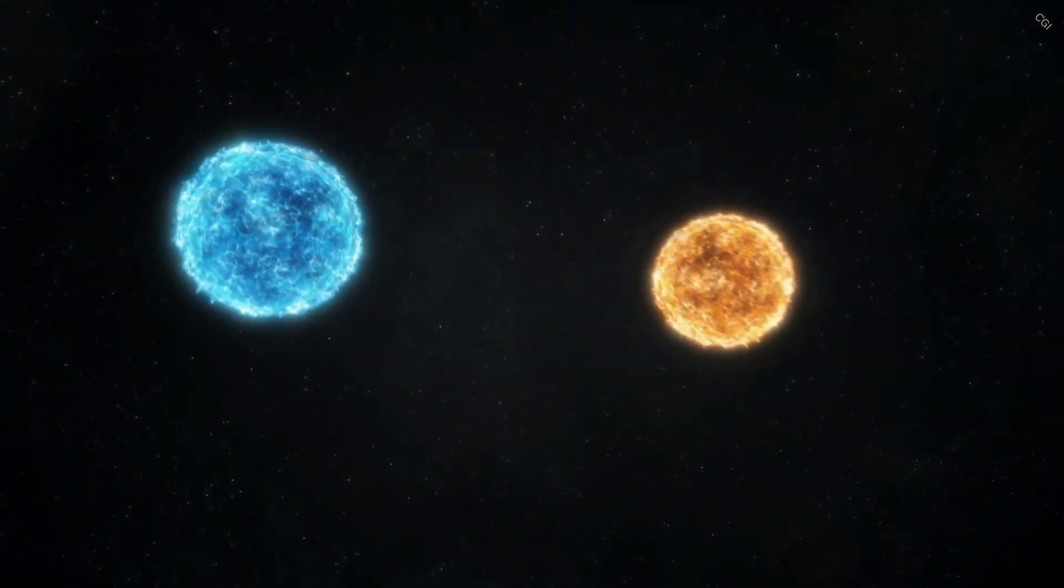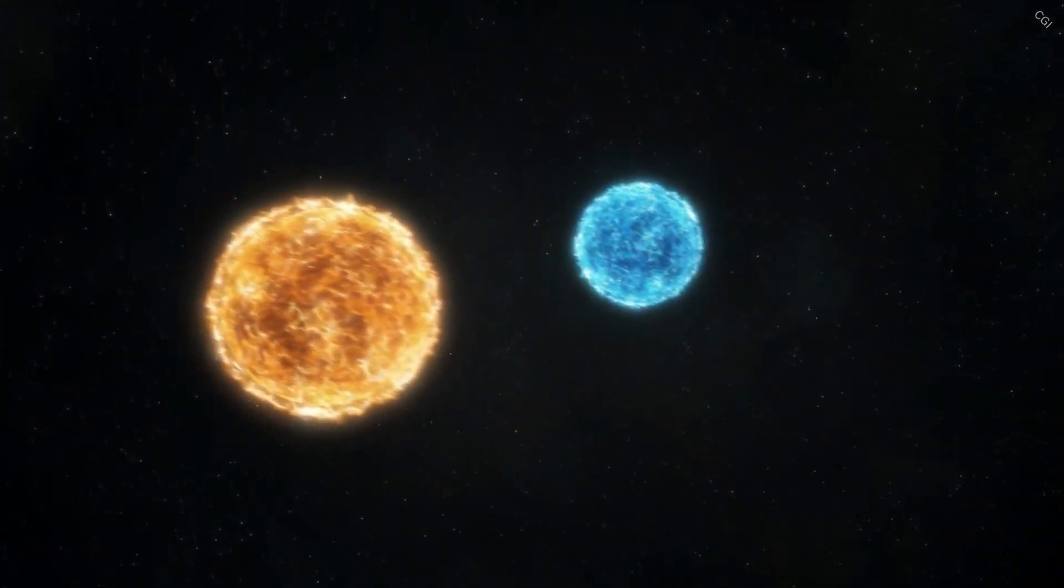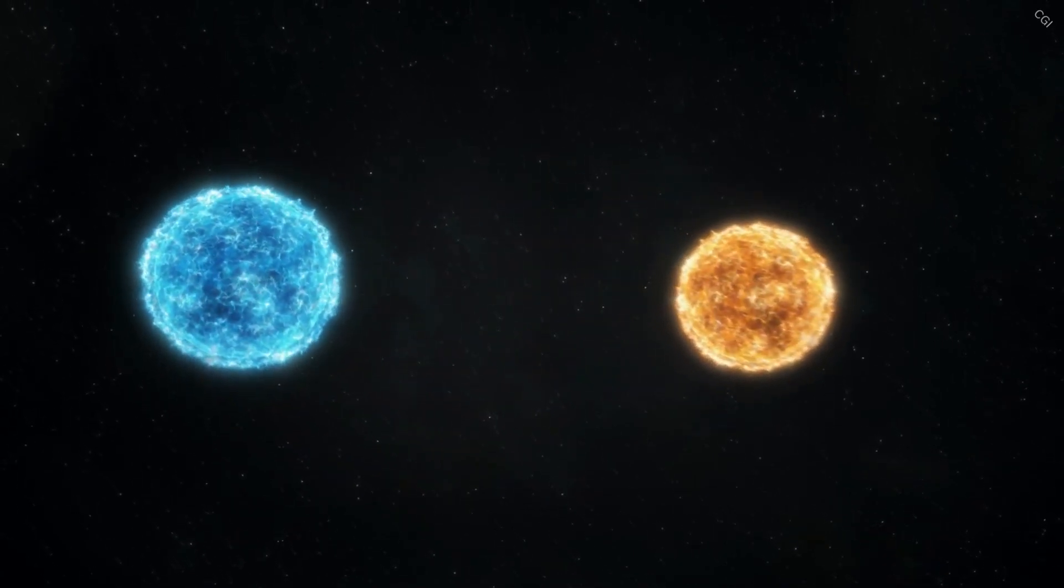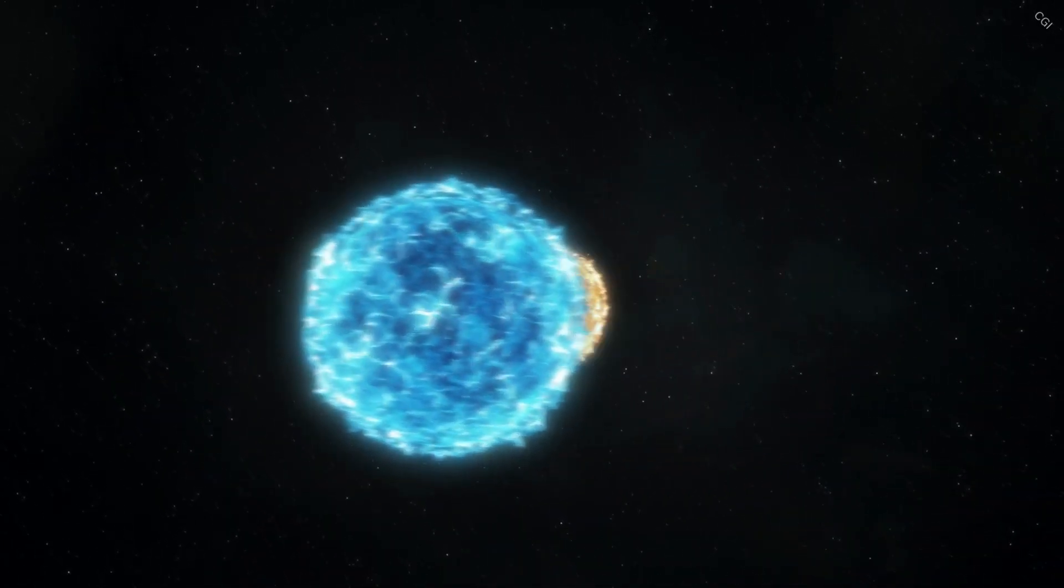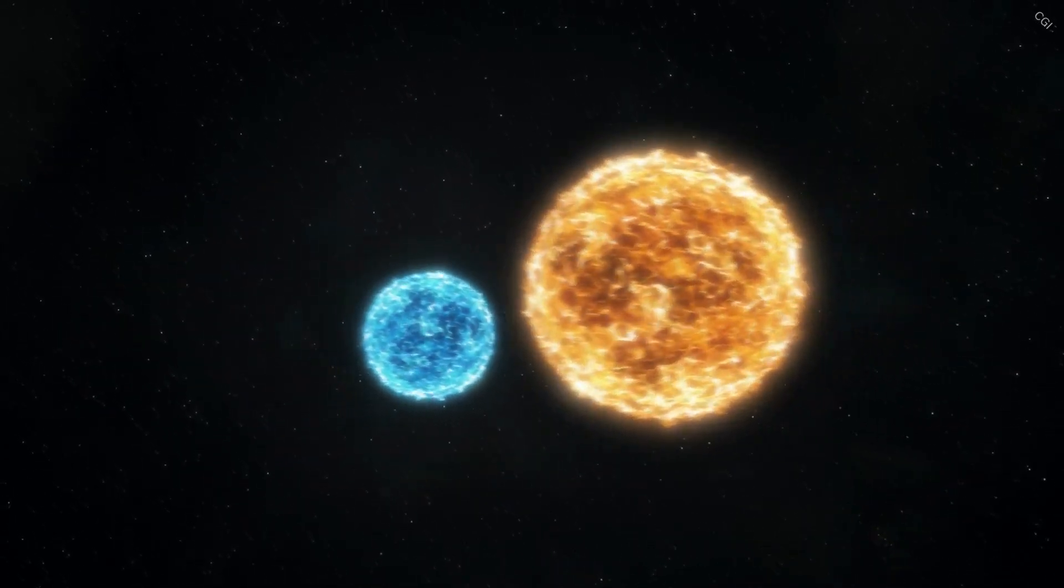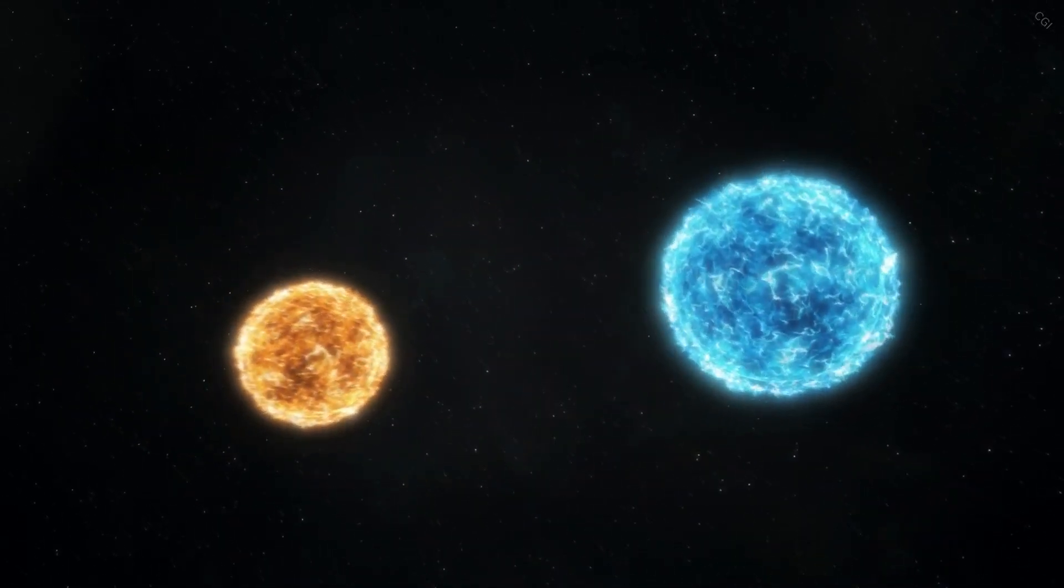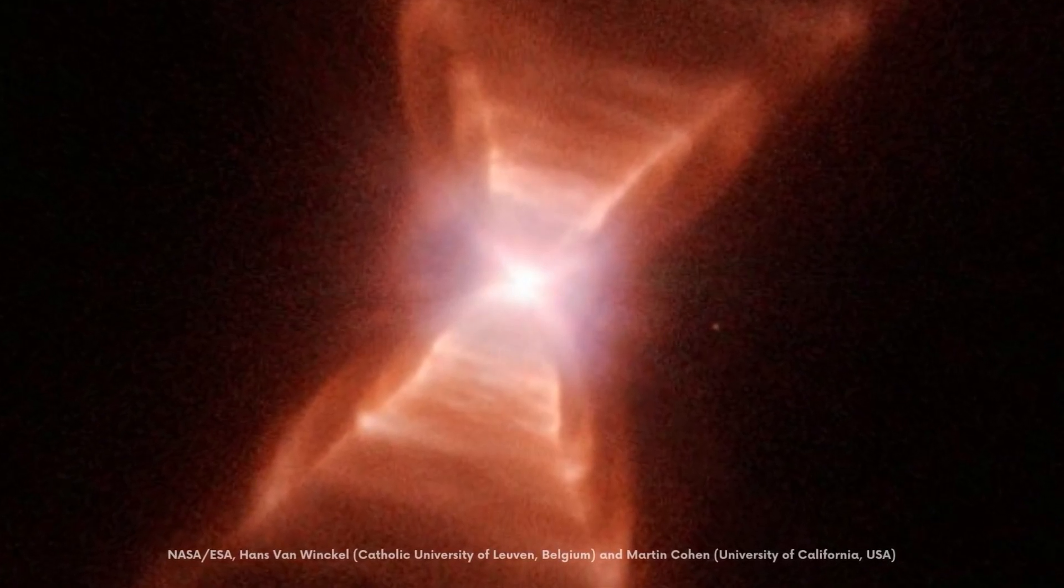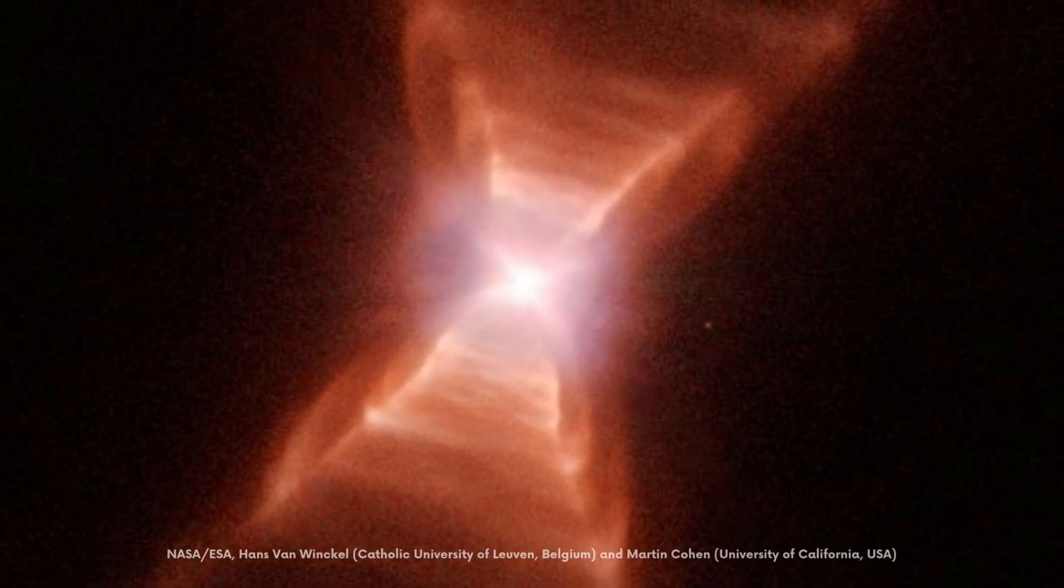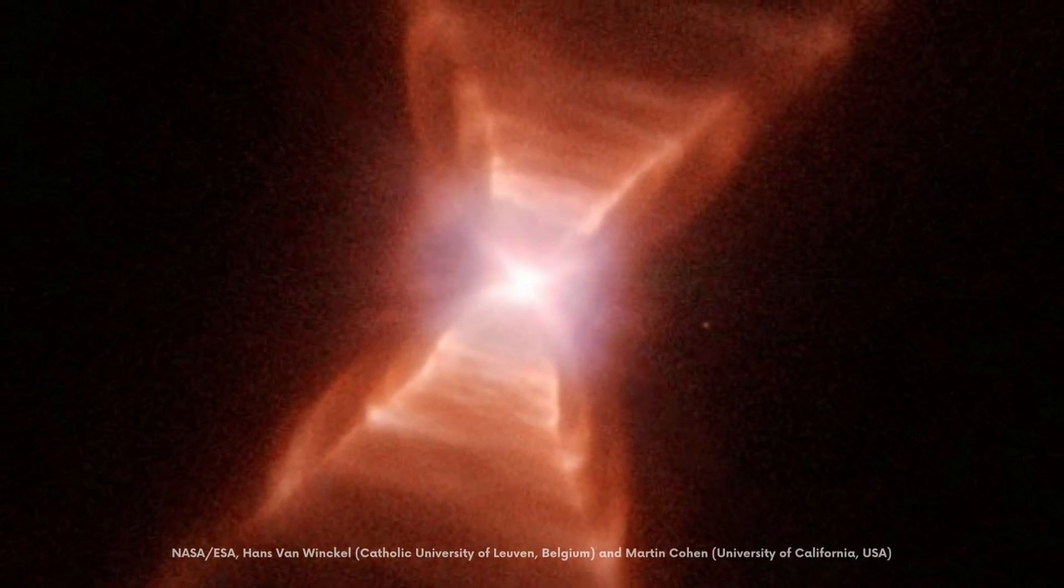Astronomers determined that the central star is actually two stars orbiting each other, with a time period of around ten and a half months. One was initially believed to be a white dwarf, but it was later confirmed to be a normal, hot star. The X shape of the nebula is caused by two conical emissions, one from each star, giving it the impression of an hourglass.